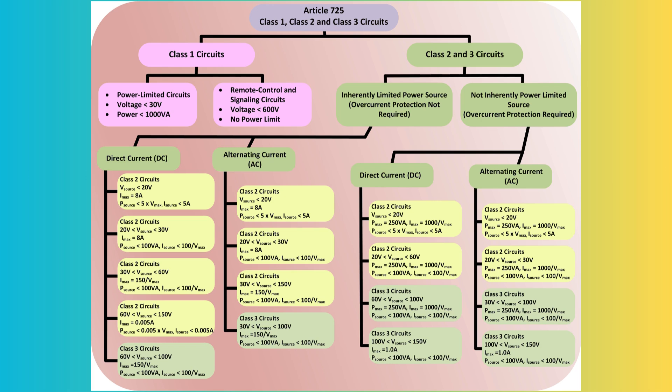This distinction enables modifications to the general rules outlined in Chapters 1 through 4, which apply to electric light and power circuits. When a circuit qualifies under Article 725, the material and installation requirements can be less stringent compared to those for electric light and power circuits.